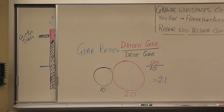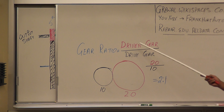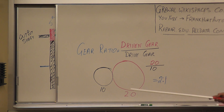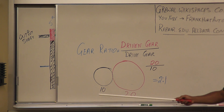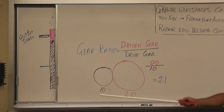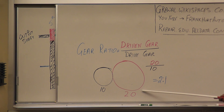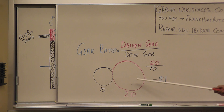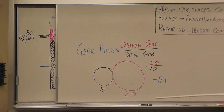To calculate the gear ratio, the formula is pretty simple: driven gear divided by drive gear. So if our drive gear has 10 teeth and the driven gear has 20 teeth, driven gear 20 over 10 gives you a 2 to 1 ratio.